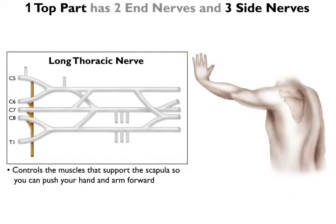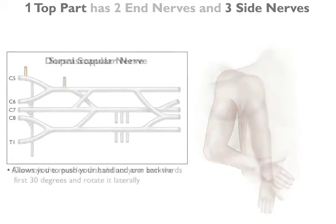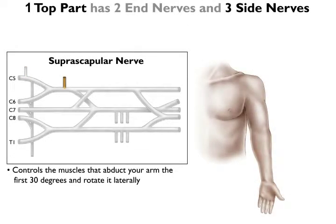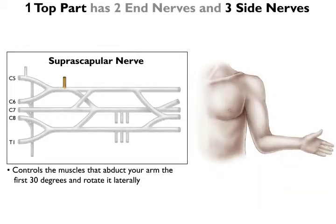Now, the 3 side nerves. The long thoracic nerve controls the muscles that support the scapula, so that you can push your hand and arm forwards. The dorsal scapular nerve allows you to push your hand and arm backwards. The suprascapular nerve controls the muscles that abduct your arm the first 30 degrees, and rotate it laterally.